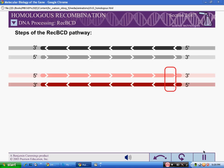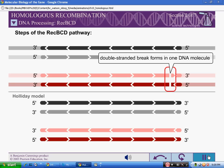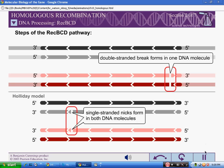In the REC-BCD pathway, homologous recombination is initiated by double-stranded breaks in a single DNA molecule, in contrast with the Holliday model, where recombination begins with single-stranded nicks at identical positions in each DNA duplex.